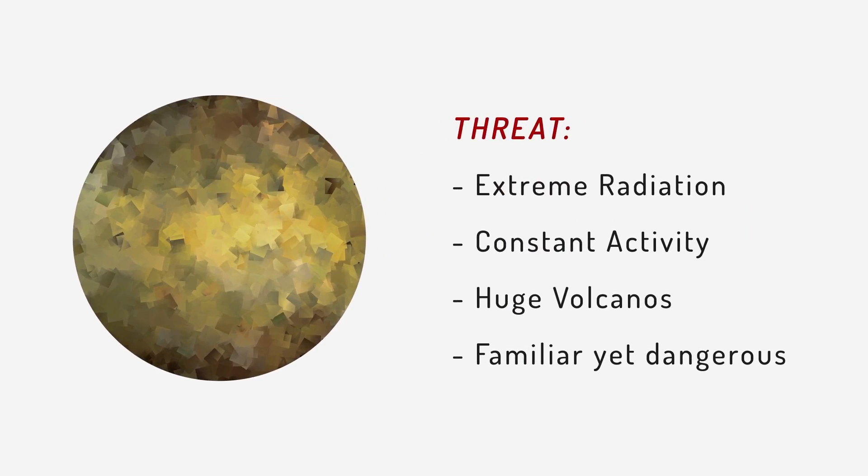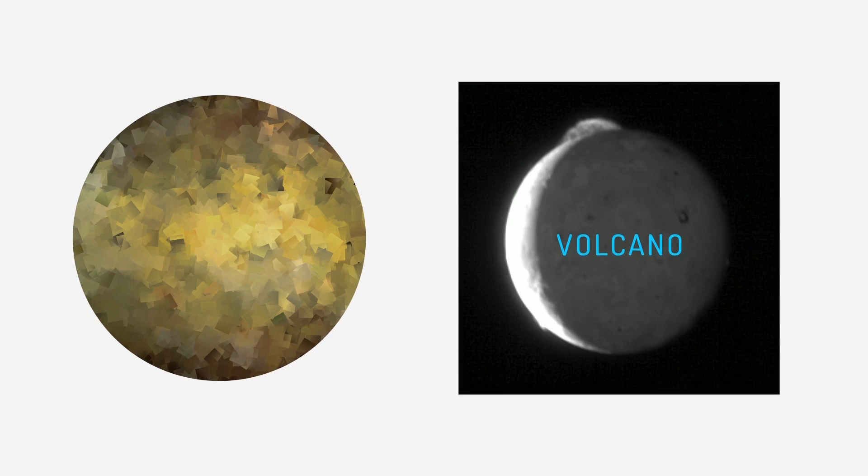Number 1 Io. Io is a moon of Jupiter, and due to the tidal forces produced by Jupiter, Io is home to the largest volcanoes in the solar system.